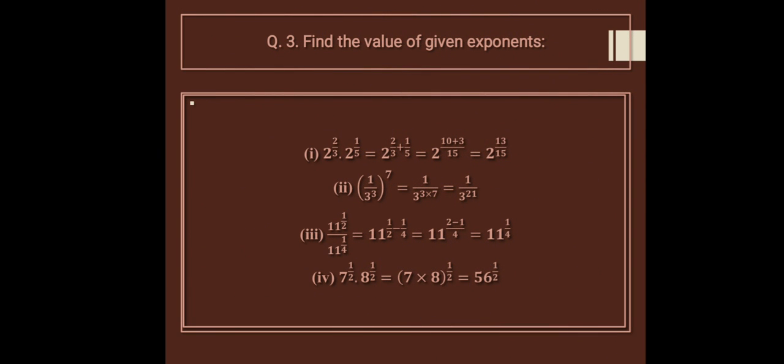In question number 3, find the values of the given exponents. Here 2 raised to the power 2 upon 3 multiplied by 2 raised to the power 1 upon 5. Both have the same base of 2 but different powers, so you will add the powers.